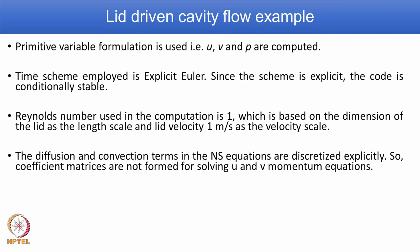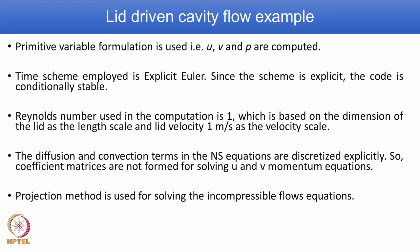We have a diffusion term on the right side and a convection term on the left side, and both are discretized explicitly in the Navier-Stokes equations. So coefficient matrices are not formed for solving the u and v momentum equations. We have a procedure called pressure-velocity coupling. We learned 3–4 methods: the MAC algorithm, SIMPLE, SIMPLER, SIMPLEC, and the projection method.